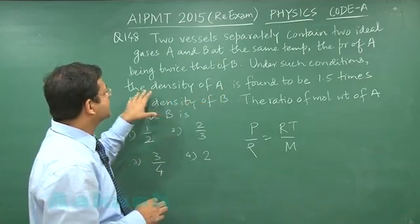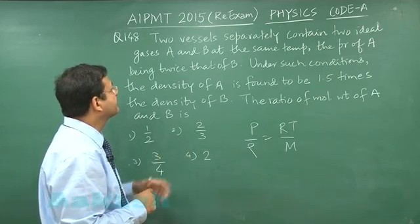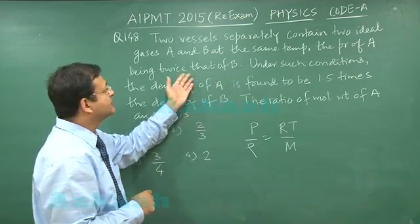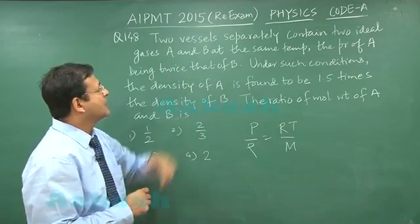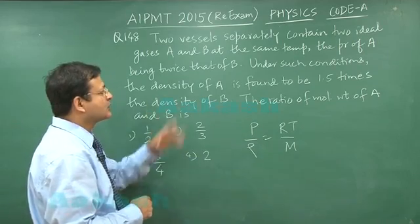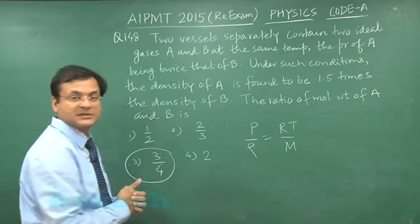Density of A is found to be 1.5 times. Density ratio has been given and the pressure ratio is also given. Pressure of A is twice that of B. So if you do that, you can calculate the ratio of molecular weight, which is what is required in the question, and you will be getting the answer 3 by 4.